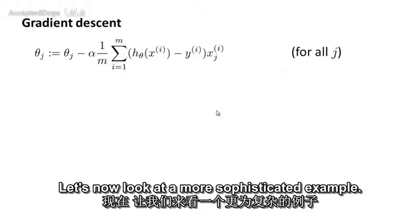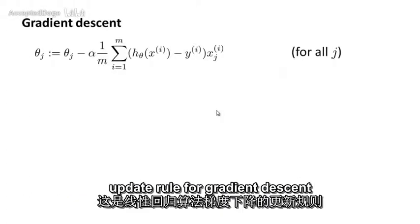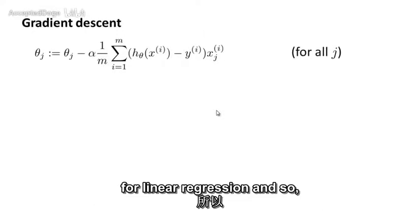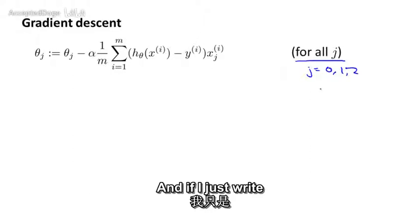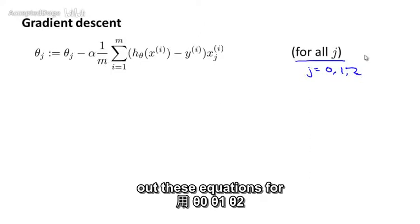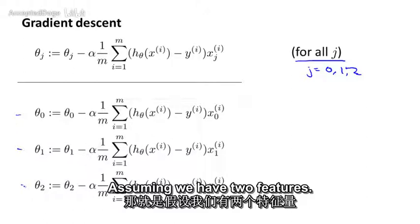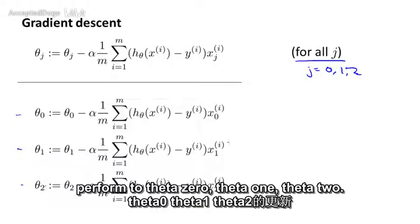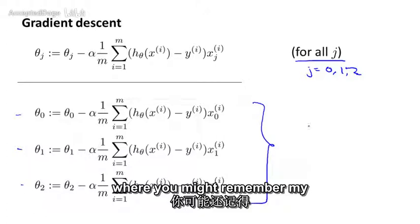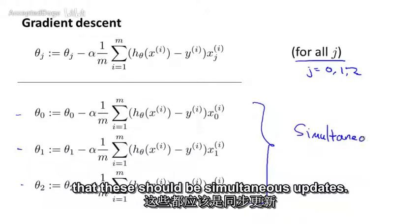Let's now look at a more sophisticated example. Just to remind you, here's our update rule for gradient descent for linear regression. And so we update theta j using this rule for all values of j equals 0, 1, 2, and so on. And if I just write out these equations for theta 0, theta 1, theta 2, assuming we have two features, so n equals 2, then these are the updates we perform to theta 0, theta 1, theta 2, where you might remember my saying in an earlier video that these should be simultaneous updates.